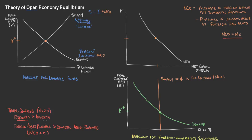What does that look like on the graph? Greater amounts of net capital outflow means we're moving in this direction — this is where we're running a trade surplus. Anytime we're running a trade surplus, we're moving further in that direction, and we can think through how that then interacts with the real interest rate.